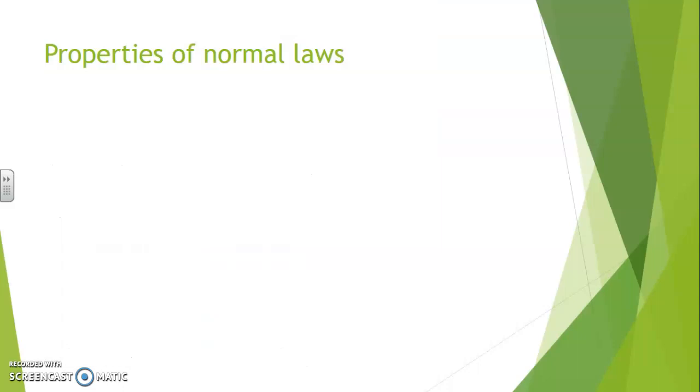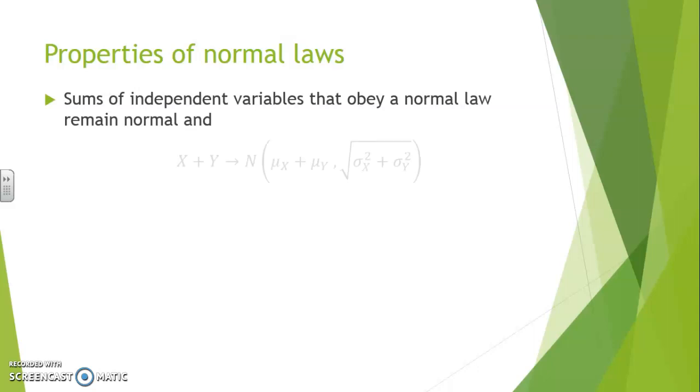Normal laws have pretty sophisticated properties, among which, if we are dealing with a sum of independent variables, both of which obey normal laws, then the sum itself will also obey a normal law.